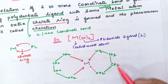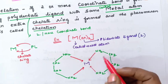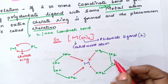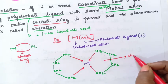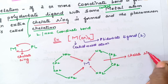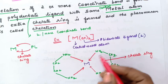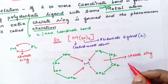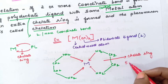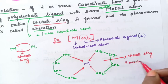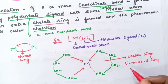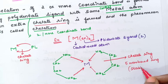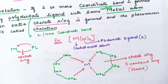A 5-membered ring is formed here. This ring is called the chelate ring, and it is a 5-membered ring. Students, you know that a 5-membered ring or a 6-membered ring will be more stable, and that is why this chelation takes place.